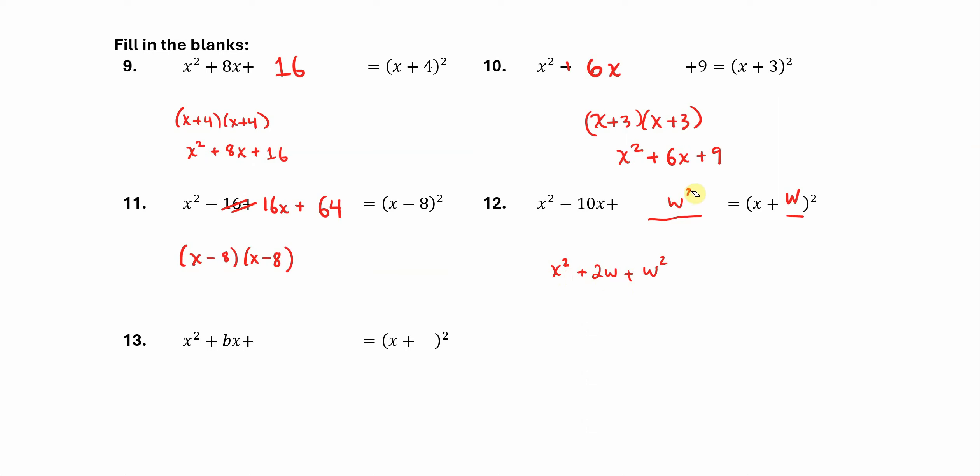Sorry, let me correct that. Yeah, it's going to be x squared plus 2wx plus w squared. So that tells me that whatever value goes here, it must be w squared. Now all that remains for us to figure out is, well, what exactly is w? I'm sorry, this should be 2wx. I forgot to write that x.